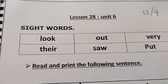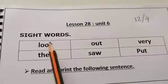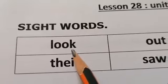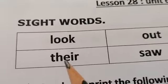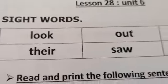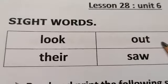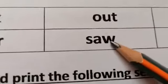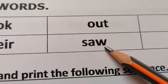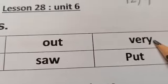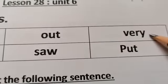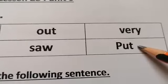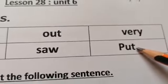Today we are doing lesson 28. Now, let's read the sight words that we've been learning. Who can read this word for me? Look. Very good. Look. There. Very good. Out. Who can read this word? So. Very. This is a word we use often. Very. Put. Excellent.